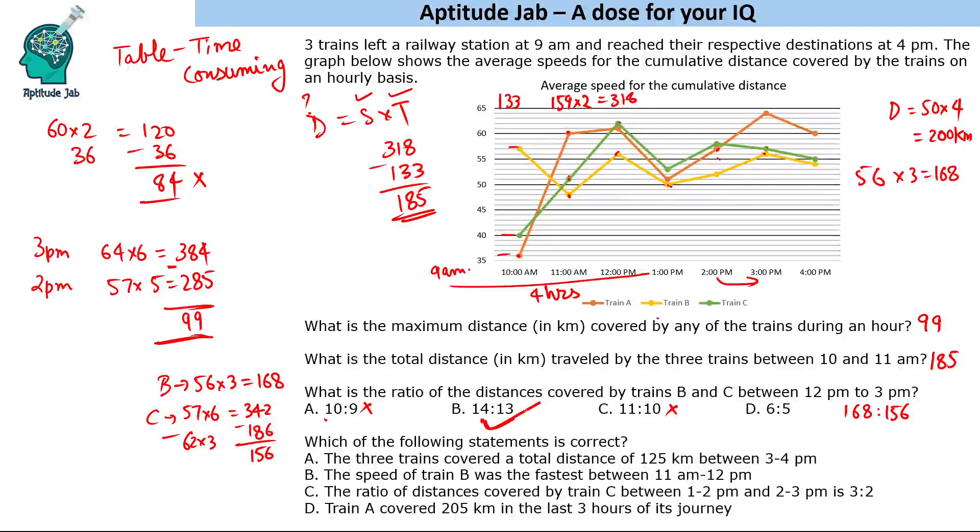The last question is: which of the following statements is correct? We are given four statements. The three trains covered a total distance of 125 kilometers between 3 and 4 PM. Again we will do the same thing - we will not make a table, we will just use these statements like we found the distance between 10 and 11.